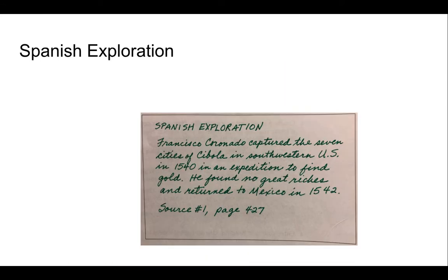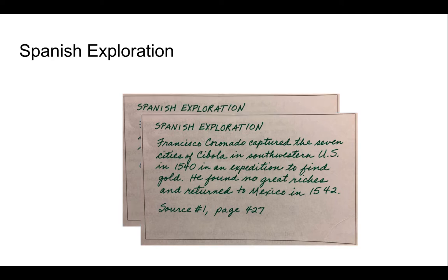So we would continue to read through this reference, creating additional fact cards as we worked our way through, and then we would go to the next reference and organize that information using the same process. The best part of this is that as we do our research and build our deck of cards, we can organize our cards by facts and ideas. All of the cards that deal with the Spanish exploration can be put together to create a fact-filled section. We didn't have to remember which book contained the various details — we could collect them all together to write a paragraph or two about Spanish exploration.